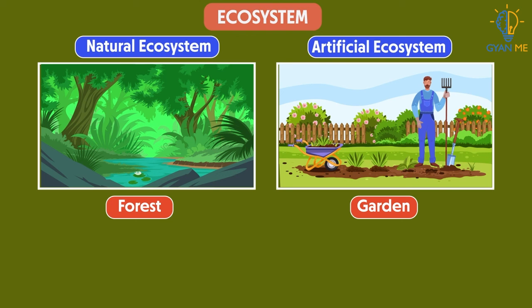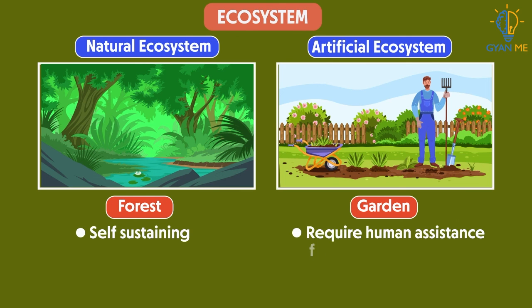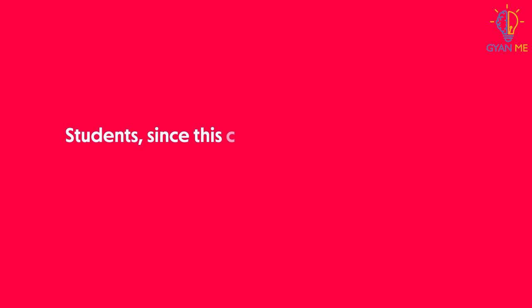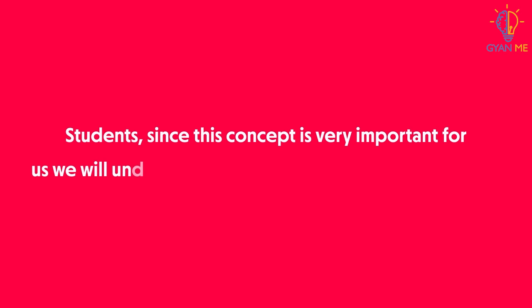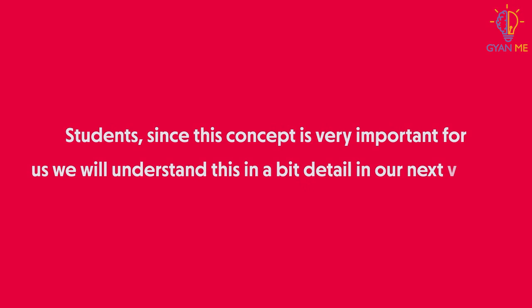Both these ecosystems have the same biotic and abiotic components, but the only difference is in their complexity and the way they are managed and sustain themselves. Natural ecosystems are self-sustaining, while artificial ecosystems require human assistance for their sustenance. Since this concept is very important, we will understand this in a bit more detail in our next video.